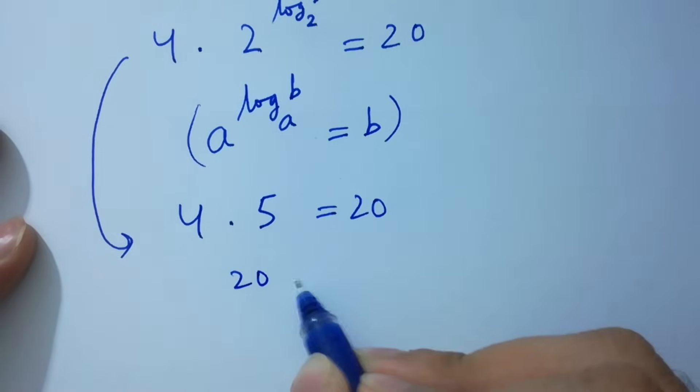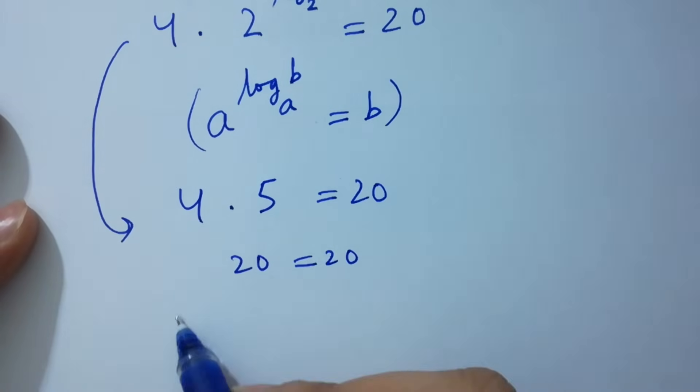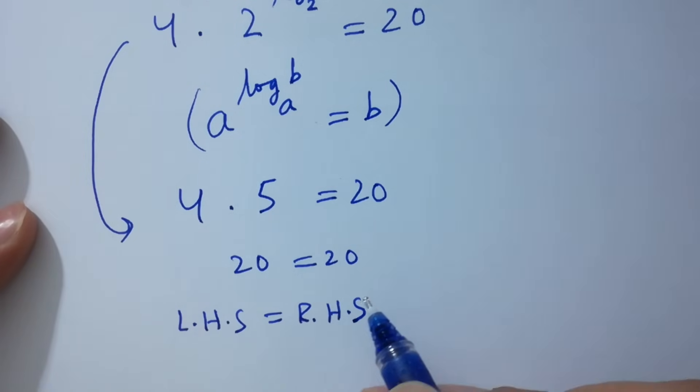We have 4 times 5 is 20 equals 20. Left hand side equals right hand side, which shows that the value of A satisfies the equation.